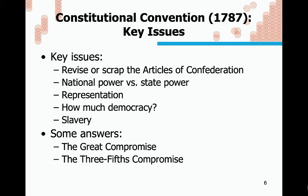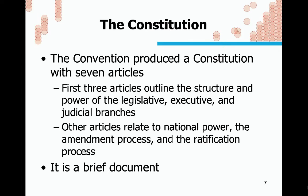The Connecticut Compromise explains why we have the Congress we have today — a Senate of 100, two per state, representing states' interests, and a House of Representatives where the number of representatives per state is based on population. The Three-Fifths Compromise meant that enslaved people counted as three-fifths for the purposes of distributing districts. The Constitution itself is a rather short document — seven articles. The first three outline the structure and powers of the branches; the others relate to national power, the amendment process, and ratification.